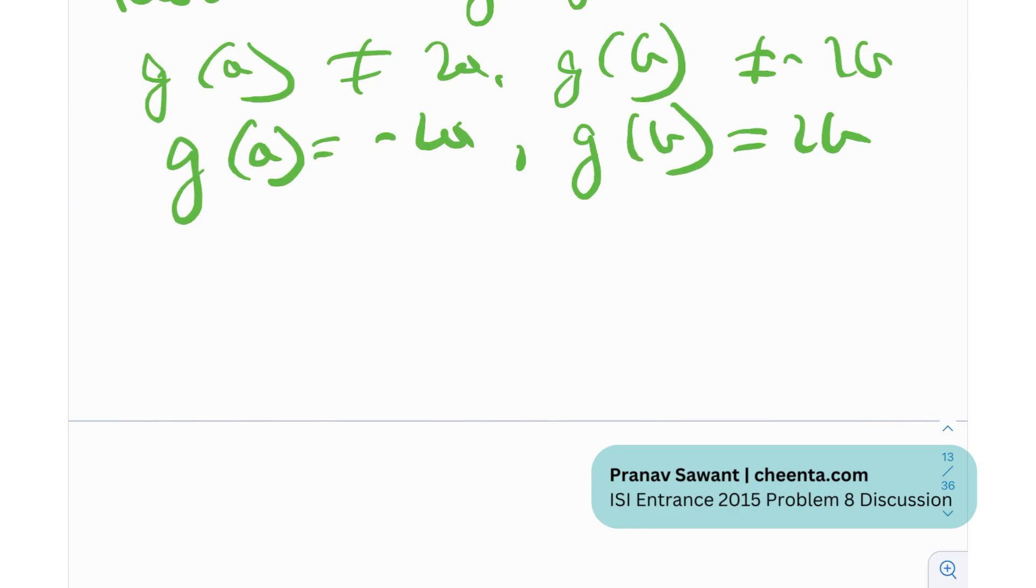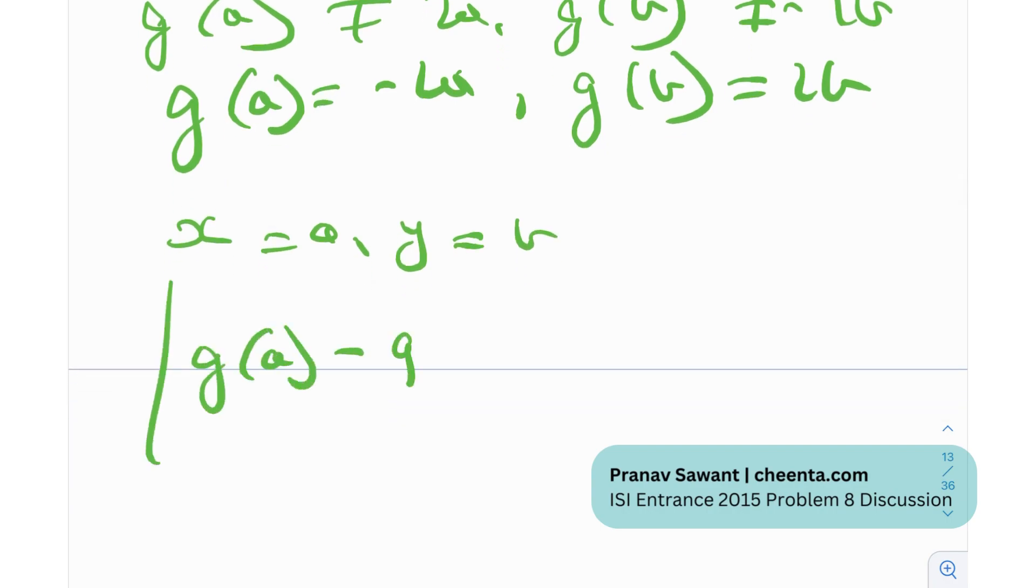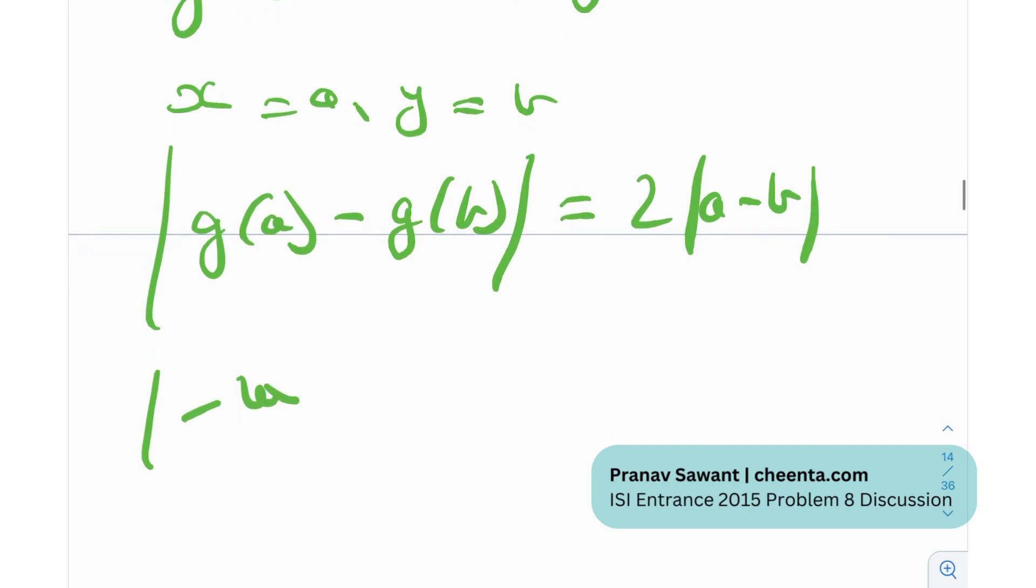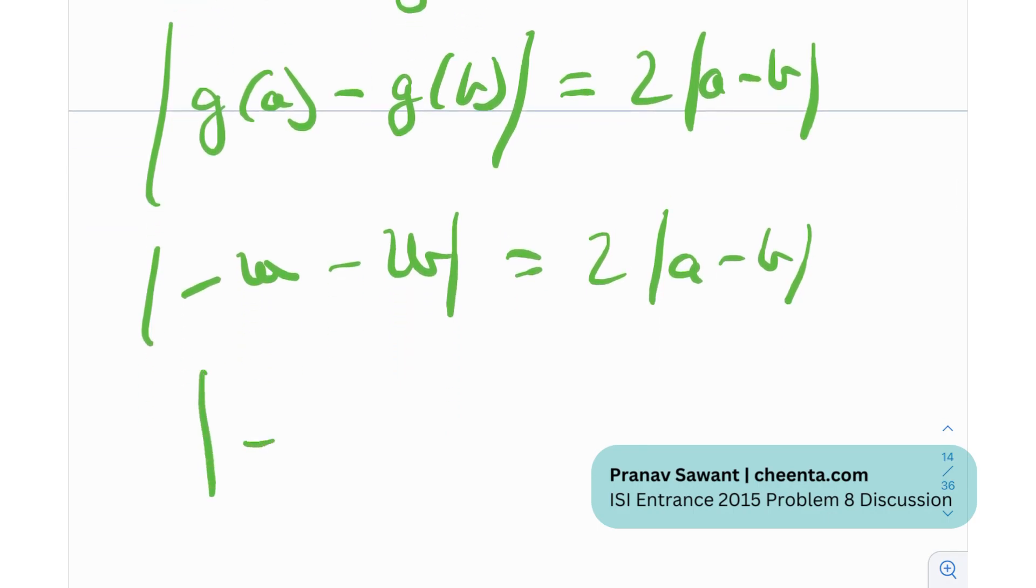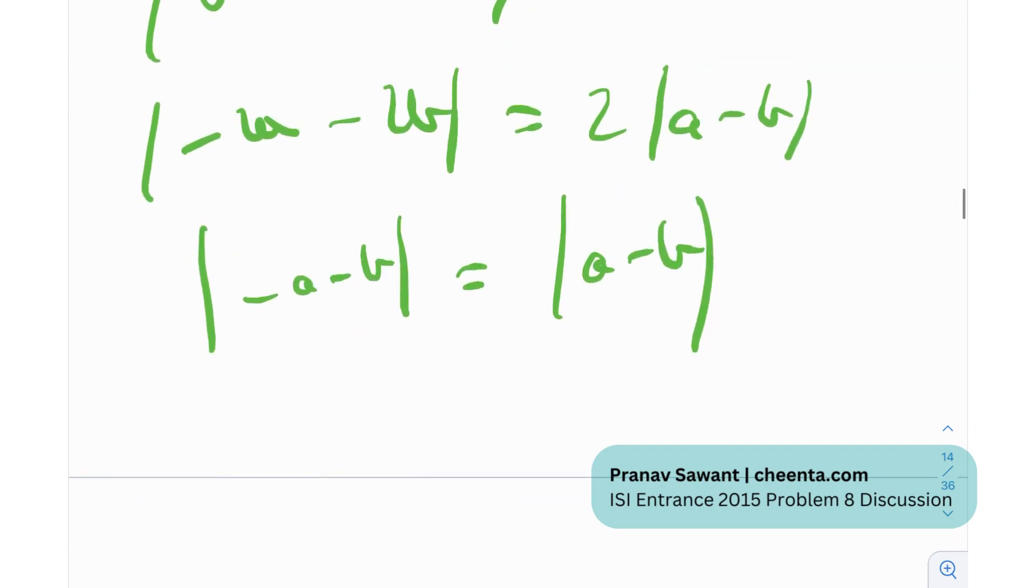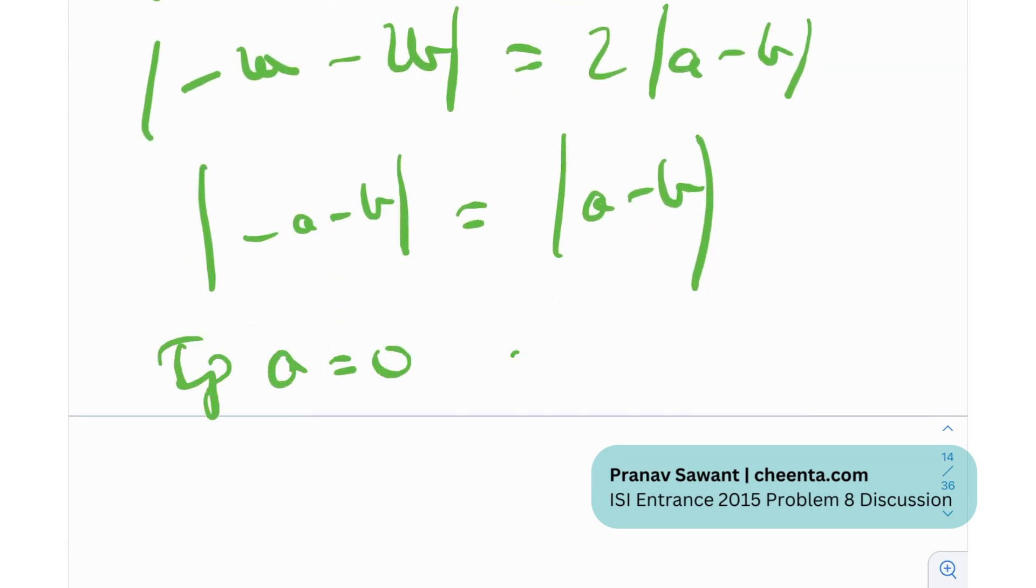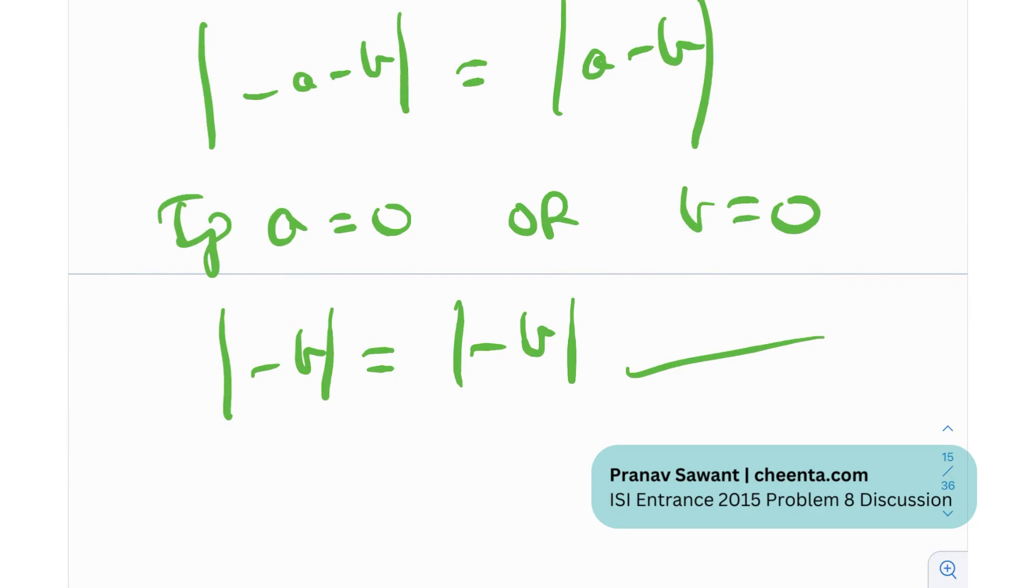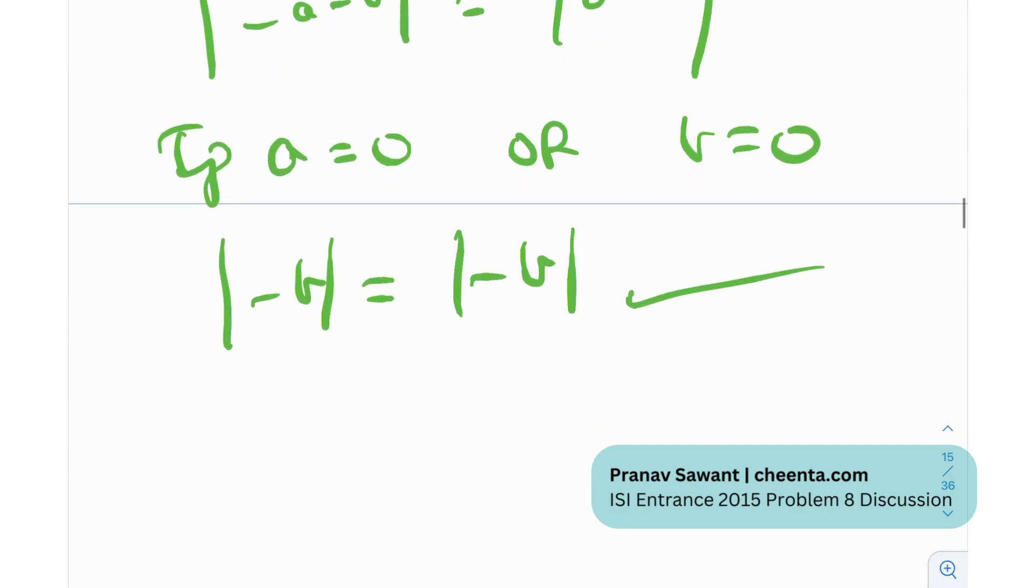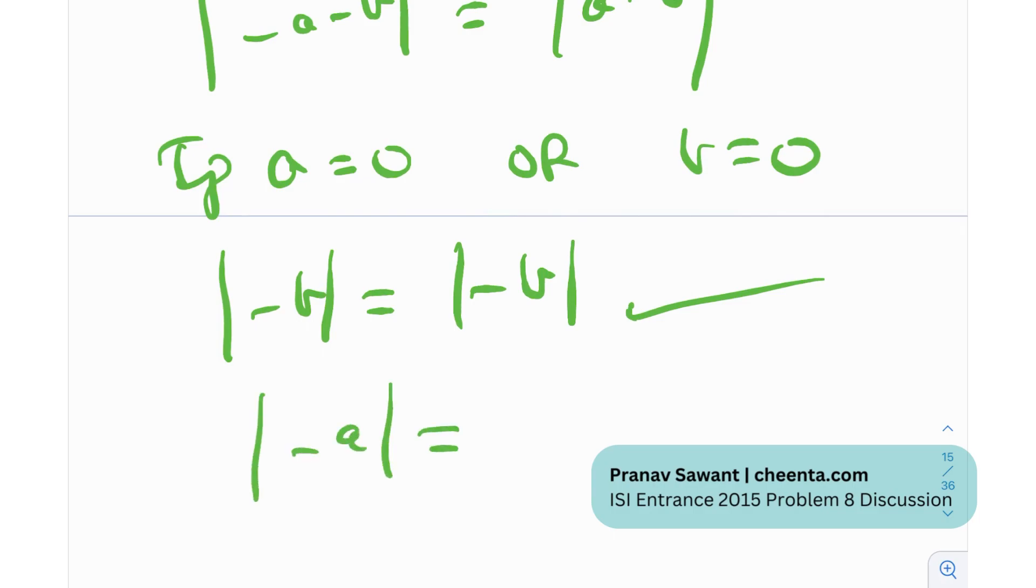And now when I just plug that back into the functional equation, I'll put in x equal to a and y equal to b. And when I do that, I'll get g(a) minus g(b) in the modulus, equal to twice mod a minus b. And what if g(a) is negative 2a and g(b) is 2b? This is twice mod a minus b. The 2 and 2 get cancelled. So mod of negative a minus negative b is equal to mod of a minus b. And this is only possible if a is equal to 0 or b is equal to 0. Because when a equals 0, I'll get mod of negative b equals this thing. That's absolutely true. Both the sign will be same when you open it. And otherwise, if b is 0, then I'll get mod of negative a equals mod of a, which is again true.